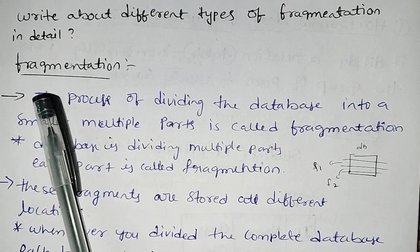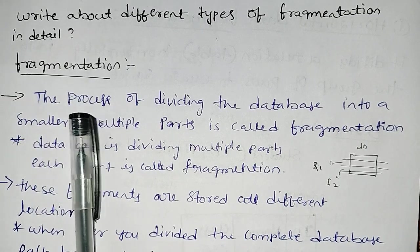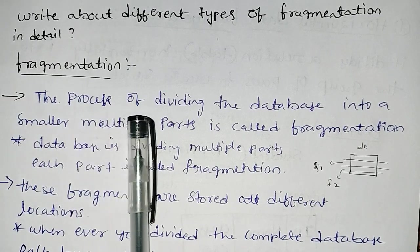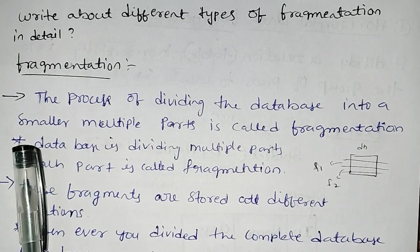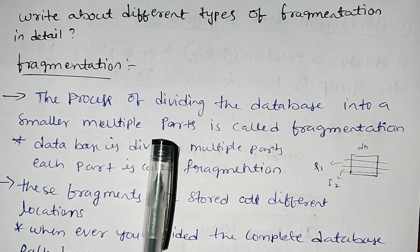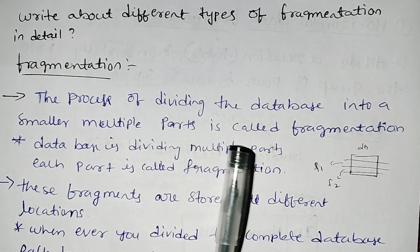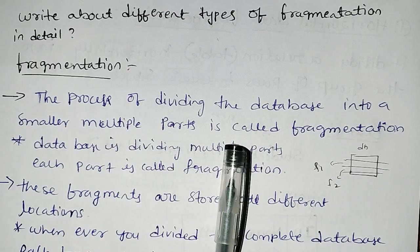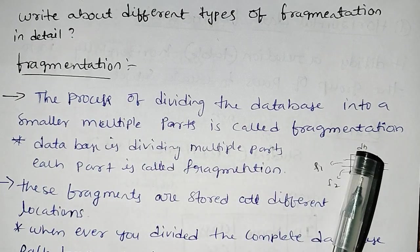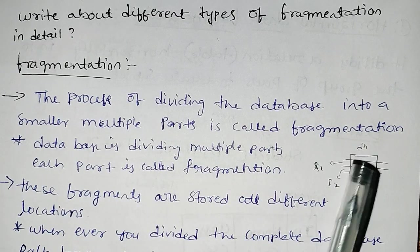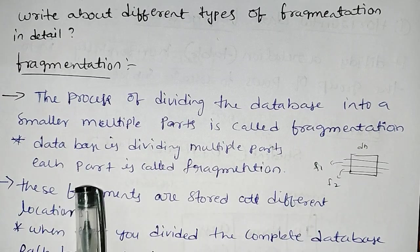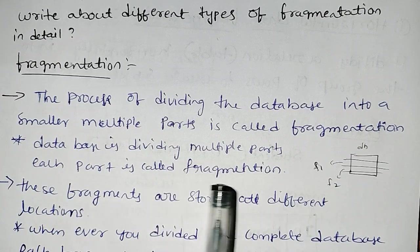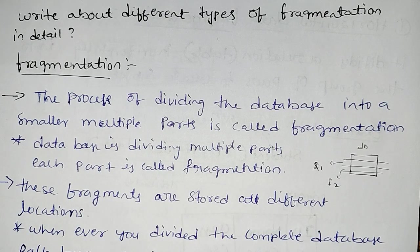What is the process of dividing the database into smaller multiple parts? It is called fragmentation. The database is divided into parts, and each part is called a fragment.